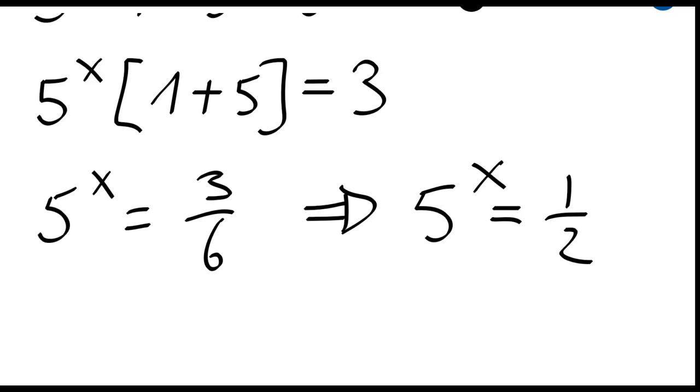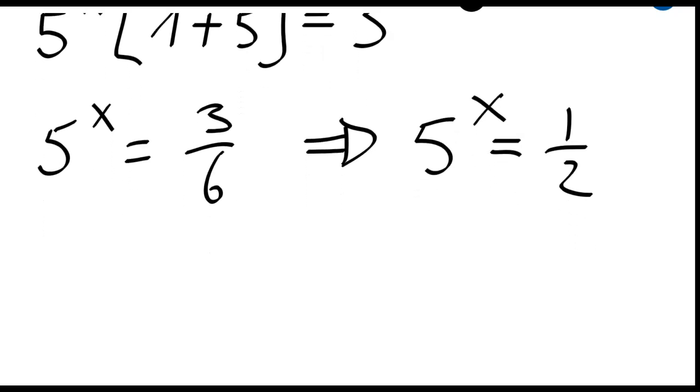So now I have this. The goal is to solve this exponential equation and find my solution x. So let me just apply the ln function on both sides of this equation. I will just have x ln of 5 which is equal to the ln of 1 divided by 2.